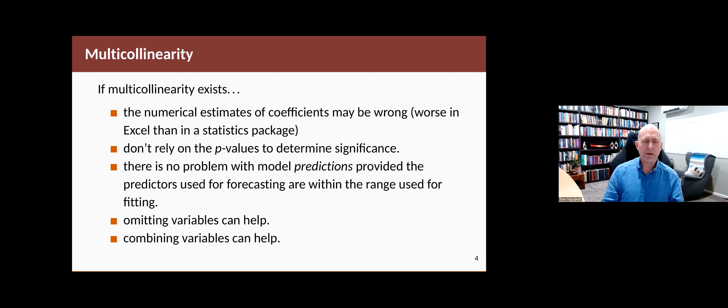But in forecasting, we're not doing that. We're just trying to find models that give good forecasts. And there's actually no problem with the predictions from the model, provided that the value of the predictors in the forecasts are within the range that you used in the training. So if your predictor normally goes between 0 and 100 and you're trying to forecast ahead and the future value of that predictor is also between 0 and 100, then the fact that it's collinear or close to collinear with other variables shouldn't matter.